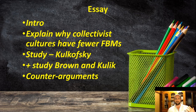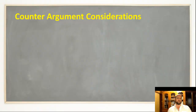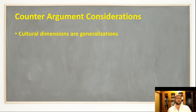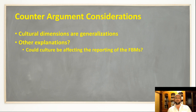You'd also need counter-arguments to show critical thinking. A good point is that cultural dimensions are generalizations — we're not saying all Chinese people will have fewer flashbulb memories than all Brits and Americans. These are general trends, not rules that apply all the time. You also have to ask: are there other explanations for why people in China and Turkey had fewer flashbulb memories? Could it be that culture affected the reporting of the flashbulb memory? They measured it by how much detail participants reported, but it's possible they had the flashbulb memory formation in their mind but didn't report it in as much detail.